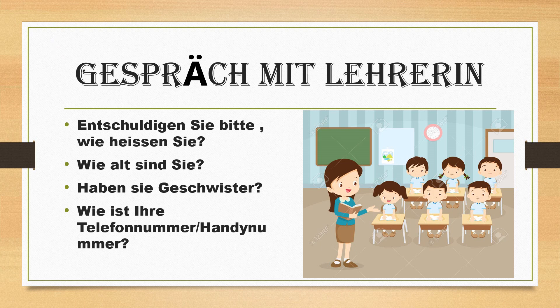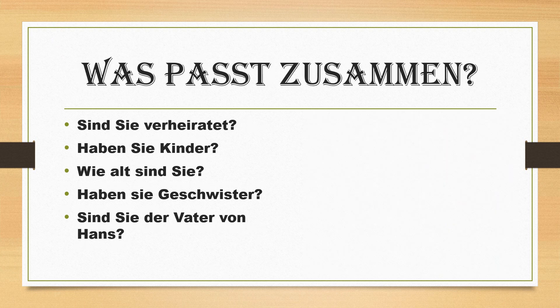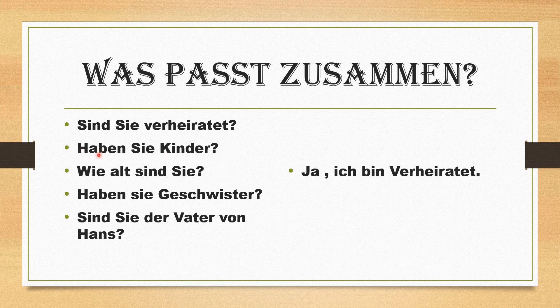Was passt zusammen — it's a matching form. 'Sind Sie verheiratet?' — Are you married? 'Haben Sie Kinder?' — Do you have children? Kinder means children. Haben in German is similar to 'have' in English. 'Ja, einen Sohn' — Yes, I have one son. Sohn means son.